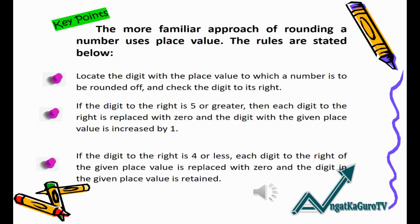Key points: The more familiar approach of rounding a number uses place value. Always locate the digit with the place value to which a number is to be rounded off and check the digit to its right. If the digit to the right is 5 or greater, each digit to the right is replaced with zero and the digit with the given place value is increased by 1. If the digit to the right is 4 or less, each digit to the right is replaced by 0 and the digit in the given place value is retained.